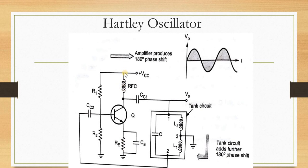This is acting as a feedback resistor. At the collector, between VCC and the collector, we have used a radio frequency choke (RFC) coil. The RFC is used to isolate the AC from the DC components. This is the amplifier section — the oscillator consists of two blocks: an amplifier in the feed-forward path and a tank circuit in the feedback path.